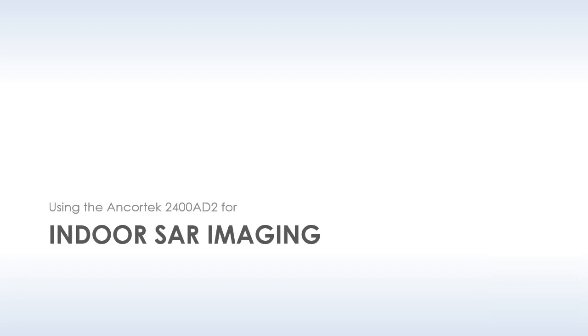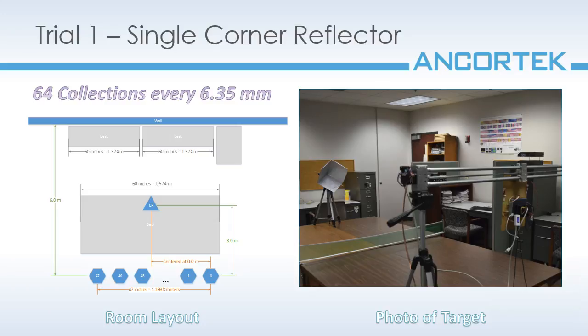Okay, so let's start out with some indoor imaging. I'm going to start with a simple corner reflector mounted at the elevation of the radar about 3 meters down range. There are several other metallic objects in the room, and I've mapped this all out in the figure on the left. A picture of what the scene actually looks like is shown on the right. For this experiment, I collected apertures with a separation of 6.35 millimeters.